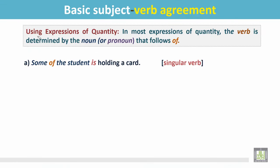In the example: 'Some of the student is holding a card.' In the sentence, the noun 'student' follows 'of,' and the noun is singular, so the verb is singular: 'is.'